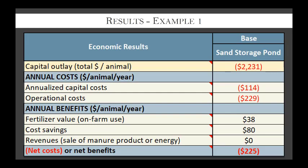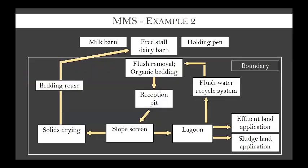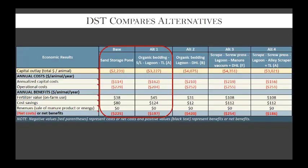Net costs are $225. To orient you: red values in parentheses are costs - think of them as negative numbers - and black values are positive benefits. A second scenario includes organic bedding and solid-liquid separation; I'll move directly to the comparison.